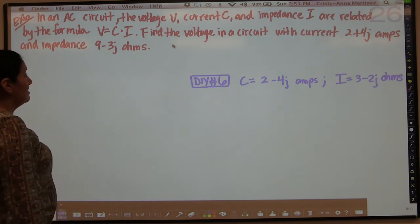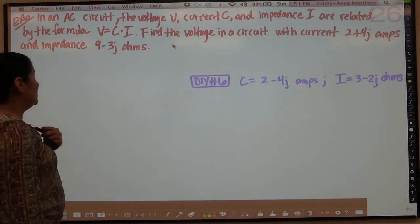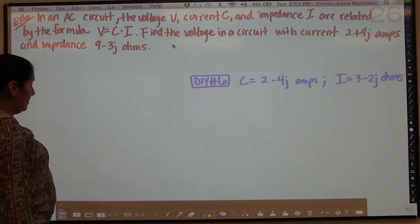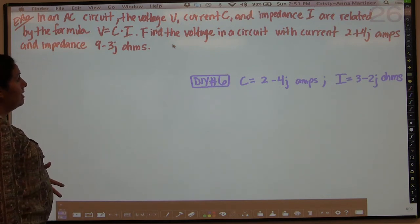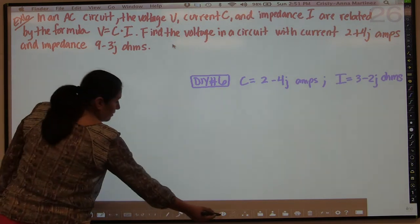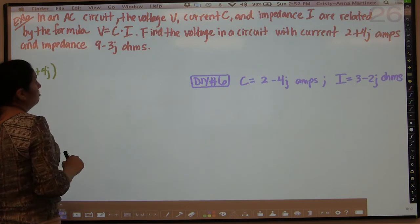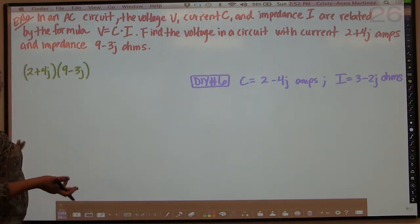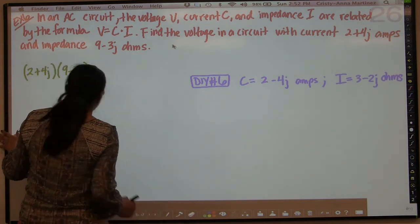Be careful with that when you do the do-it-yourself question. Now this next example is multiplication, but it's a word problem. In an AC circuit, the voltage V, current C, and impedance I are related by the formula V equals C times I. It says to find the voltage with a current of 2 plus 4j and an impedance of 9 minus 3j. We're treating j as if it were i. So we multiply 2 plus 4j by 9 minus 3j.